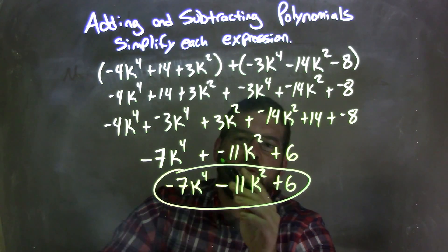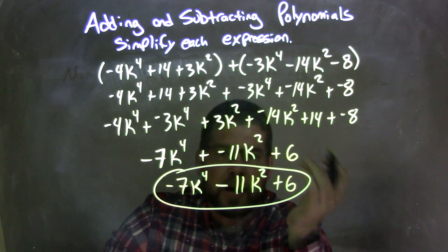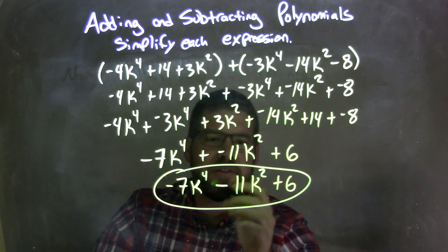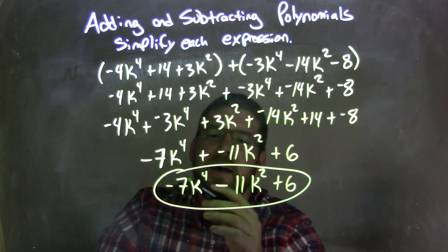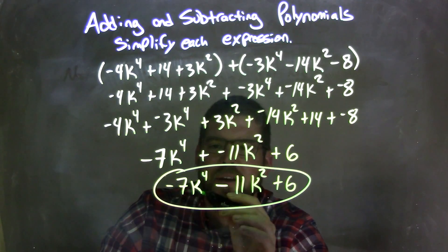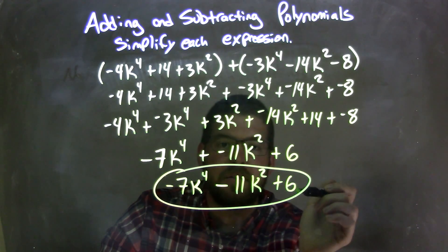Then, from there, I don't really like to have a plus and negative in my final answer, so it looks nicer to do subtraction. So, I rewrote that, and my final answer is negative 7k to the 4th, minus 11k squared, plus 6.